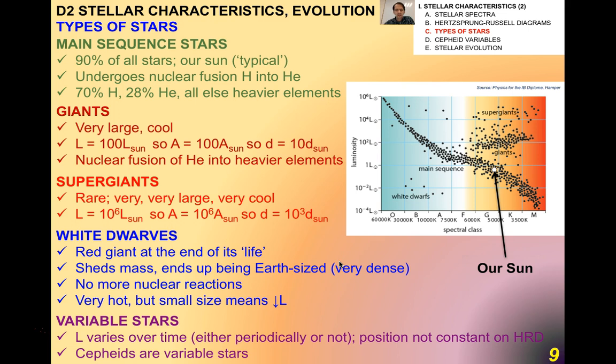And then variable stars, which I'll talk in more detail. Cepheid variables are variable stars. It turns out the luminosity varies over time. Cepheid variables, the luminosity varies periodically, which is a very important thing in astrophysics, which I'll explain.